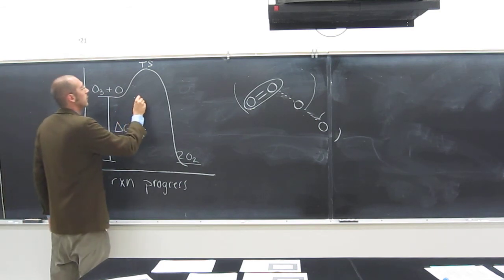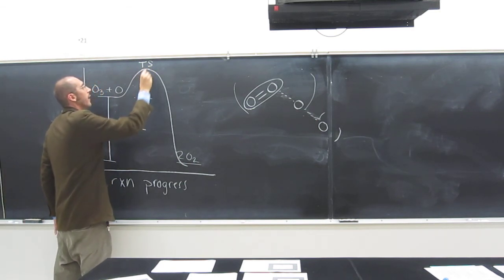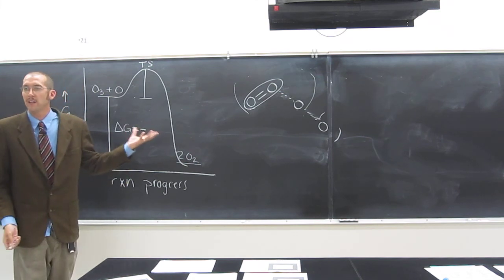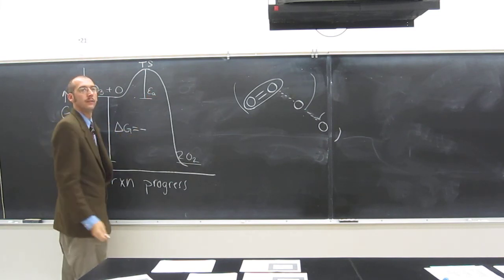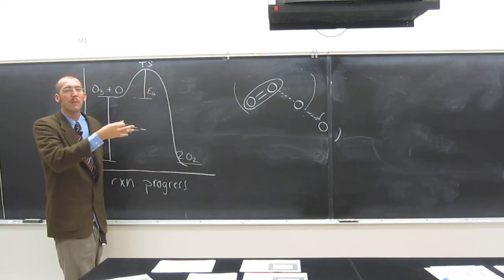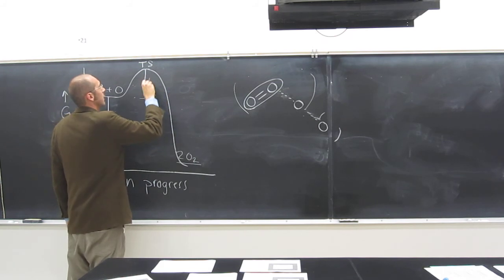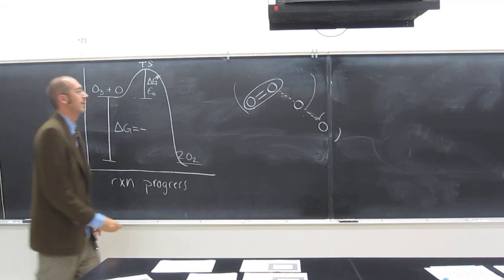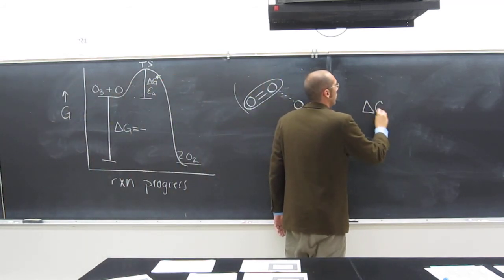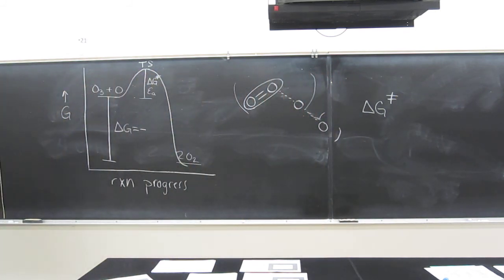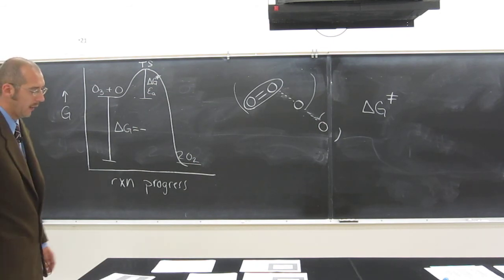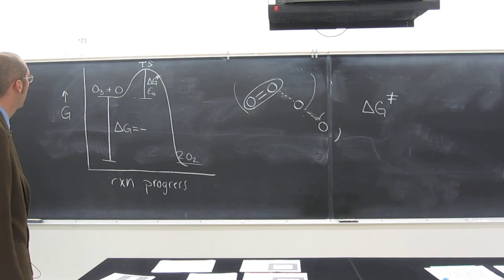But that energy, from there to there, it's called the activation energy. So we're using EA, we've been using EA. You also might see it as delta G and double dagger, it's called. So if you can't see that symbol, it's this: delta G with double dagger. That's called a double dagger.